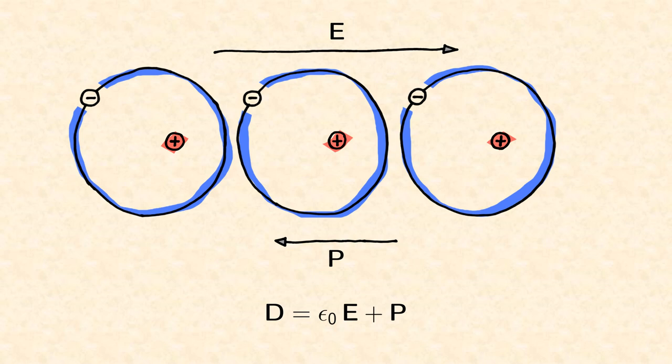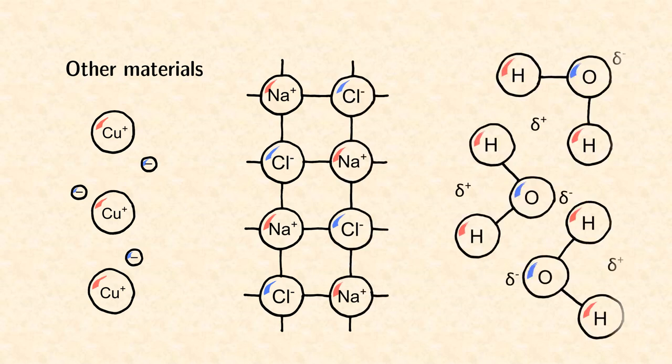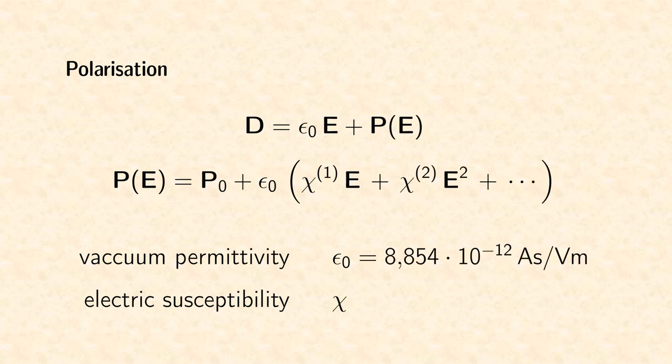And the result is called displacement field. In general, media may also contain other charged units like free electrons, ions, or molecules with a dipole moment. Furthermore, the polarization is in general an arbitrary function of the external electric field. When we approximate this function to a Taylor series, the first term is the intrinsic polarization of certain poled materials. The second term with the dimensionless susceptibility tensor chi 1 describes a linear dependence of the polarization on the electric field.